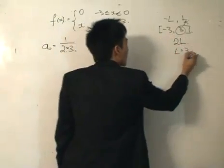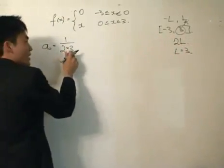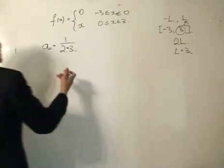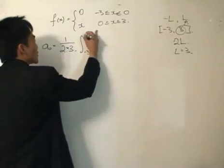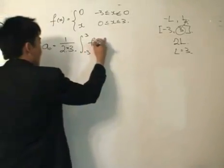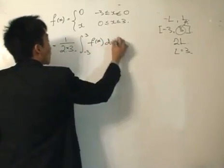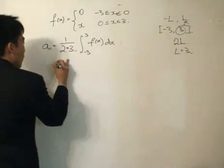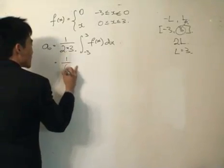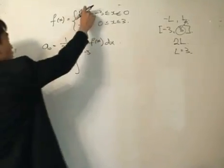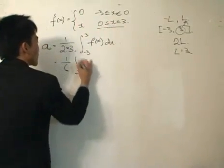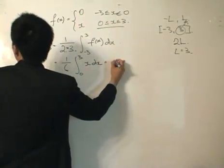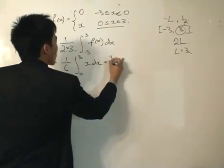L is equal to 3. So I integrate from -3 to 3 of f(x). I can write 1 divided by 6 and integrate. Since f(x) = 0 on [-3, 0], I'm just concerned with integrating from 0 to 3: the integral of x dx. This gives a₀ = 3/4.